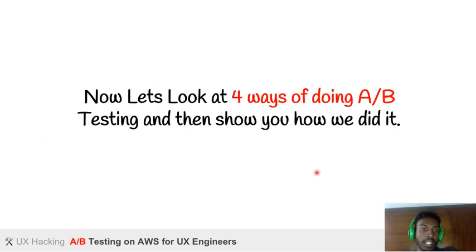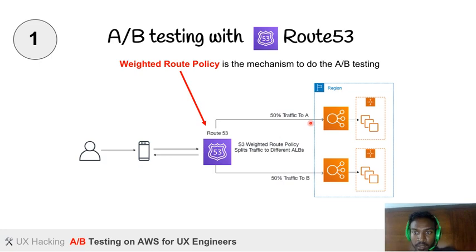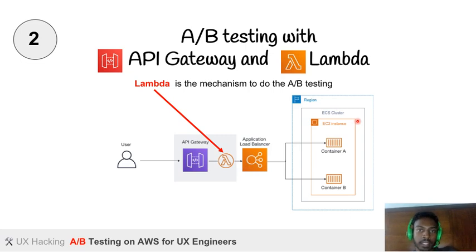Let's take a look at four ways of doing AB testing. The first way is through Route 53. The user requests Route 53, and the key mechanism is the weighted routing policy, where we split the traffic 50/50 — 50% goes to prototype A through an Application Load Balancer to multiple EC2 instances, and similarly 50% goes to prototype B.